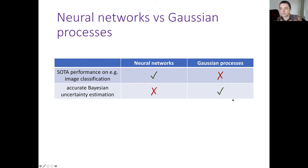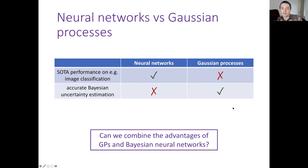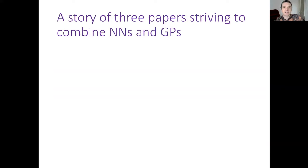The big-picture question we were asking in this series of work is: can we combine the advantages of Gaussian processes and neural networks? Can we get a unified method that achieves really good performance on image classification and at the same time really accurate uncertainty estimation?